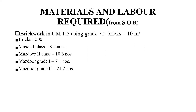For brick work in cement mortar 1:5 using grade 7.5 bricks, for 10 meter cube, bricks required are 5000. Mason first class required: 3.5 numbers; Mason second class: 10.6 numbers; Mazdoor grade 2: 7.1 numbers; Mazdoor grade 2 (additional): 21.2 numbers.